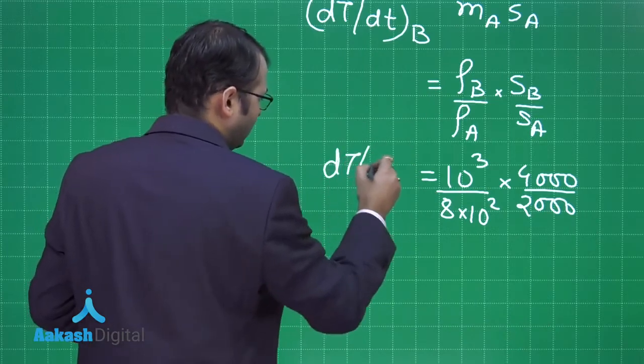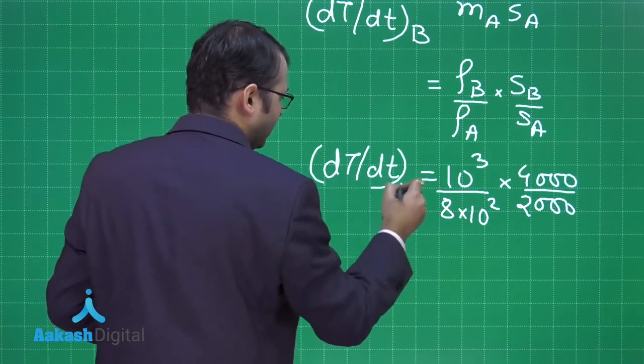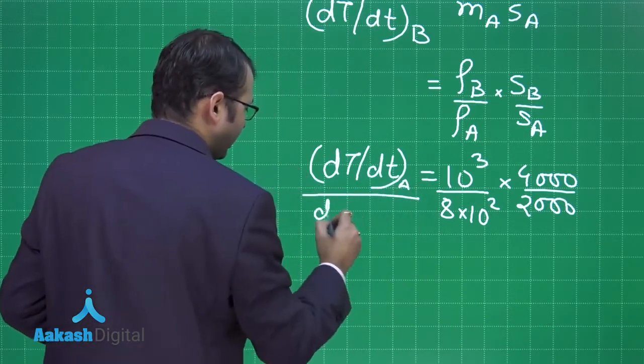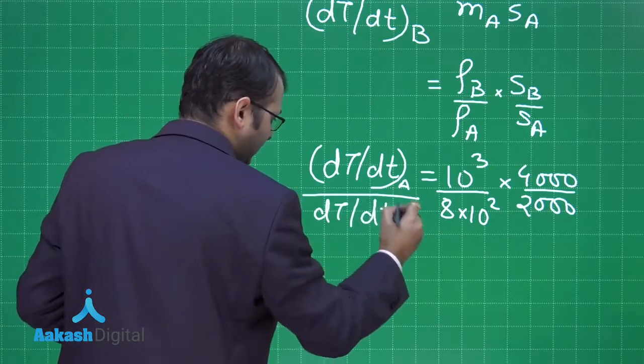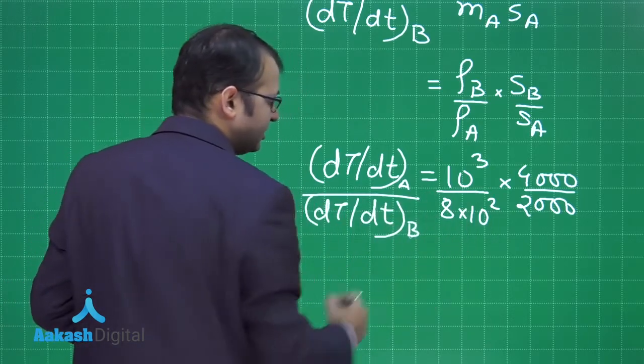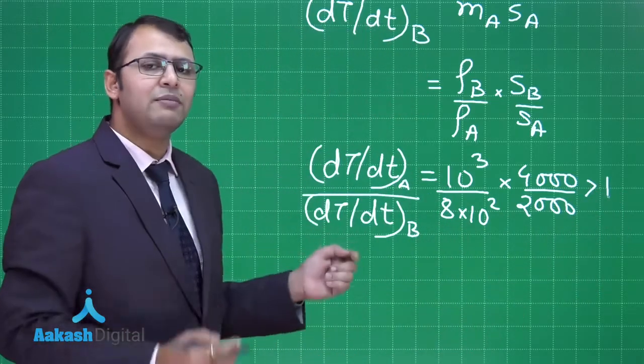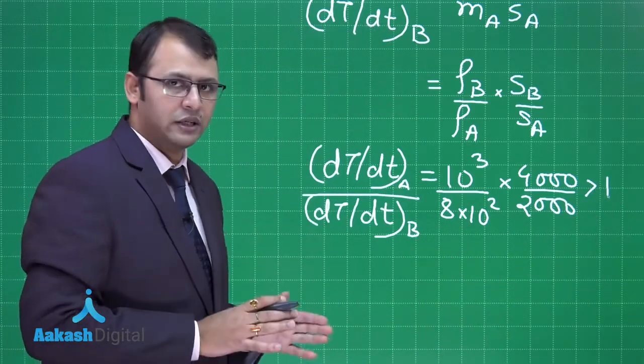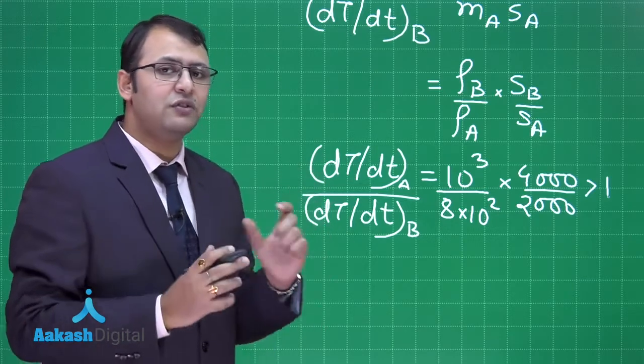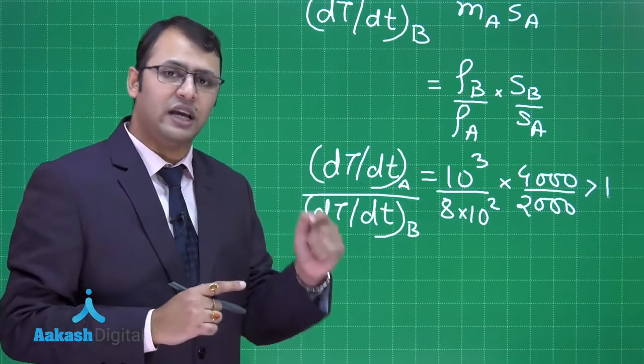For the density part, the density of B is 10³ and A is 8×10², while specific heat is 4000 divided by 2000. If you relate the rate of cooling of A to rate of cooling of B, you'll find this ratio is greater than 1, so cooling rate of A will be higher than that of B. For any given duration, the change in temperature will be more for A than B.